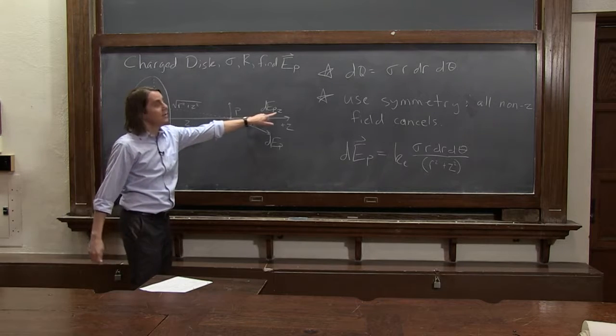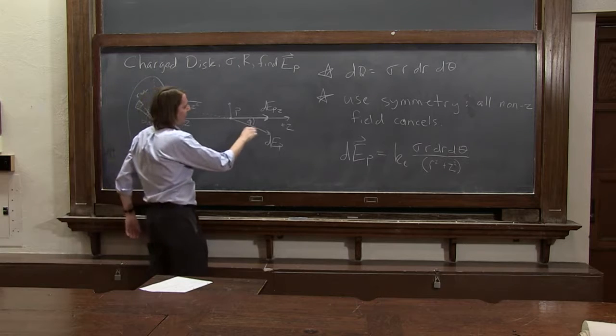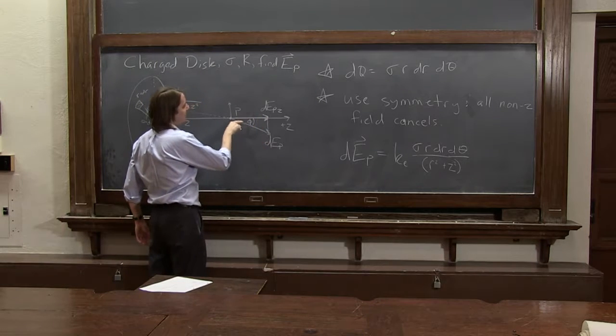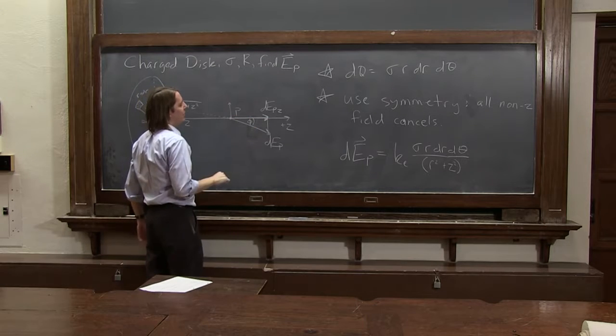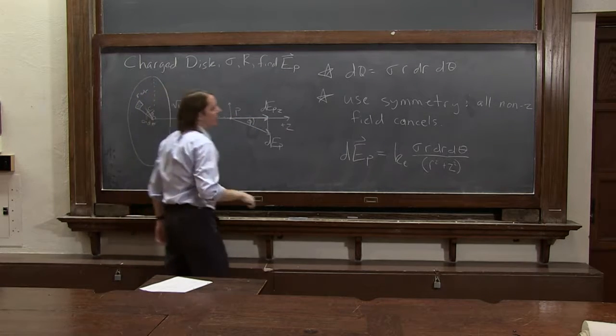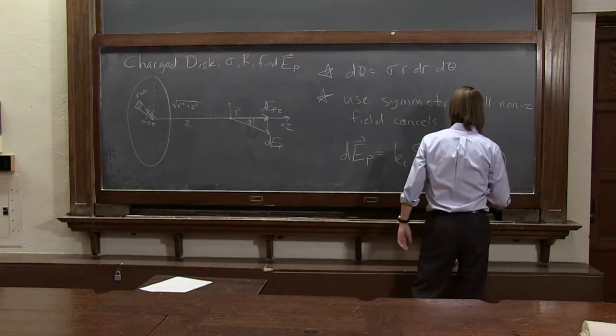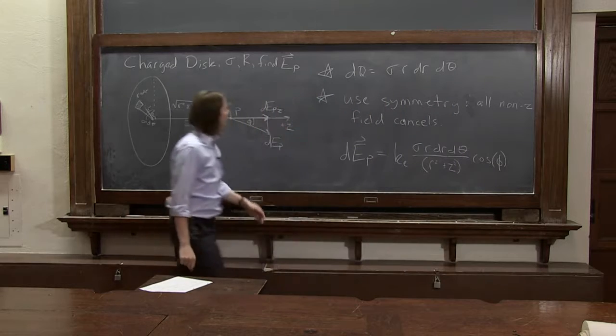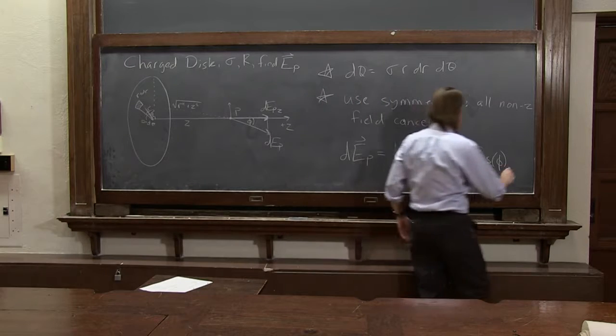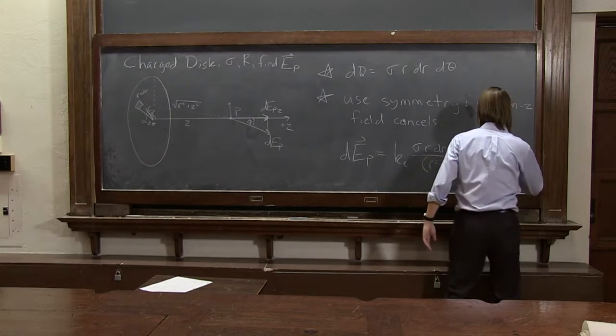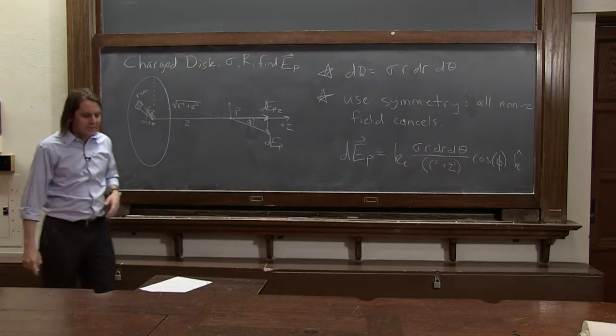And now we need the z component. So to get the z component, well, it's like there's some this way, there's some down. It's the cosine of this angle. It's the adjacent, and there's the hypotenuse. So cosine of phi. All right. So that gets us all the way down to that. And then the direction is all we need. Since we call it the z-axis, I'll call it k-hat. All right. So there, we've successfully set up the dE_P.